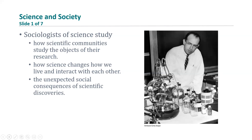Sociologists of science study how scientific communities study their objects of research, how science changes how we live and interact with each other, and the unexpected social consequences of scientific discoveries. In short, sociologists of science look at the interactions between science and society.